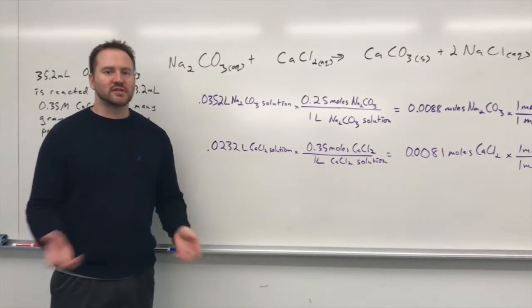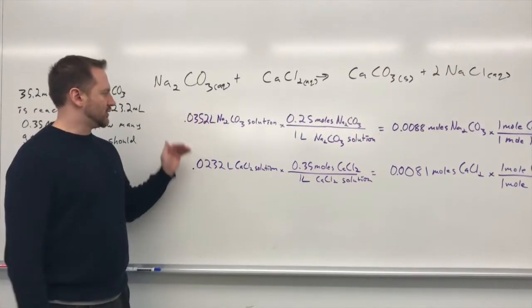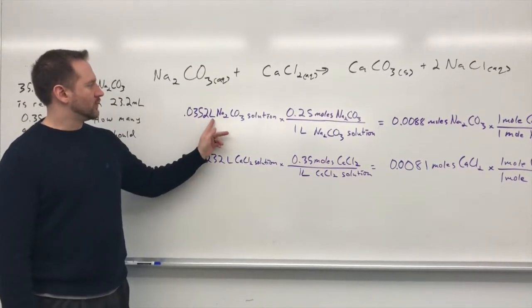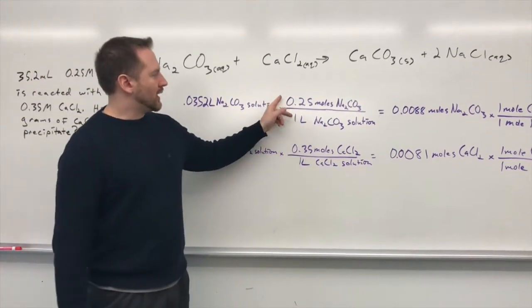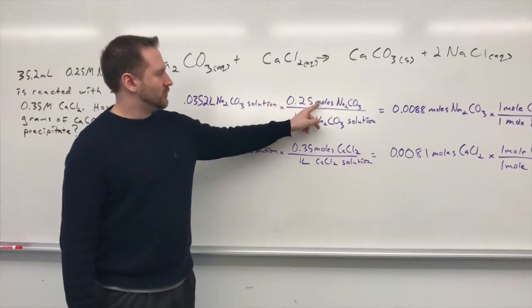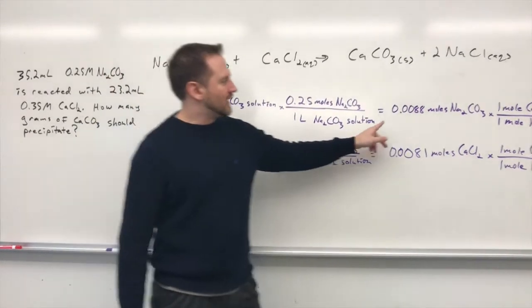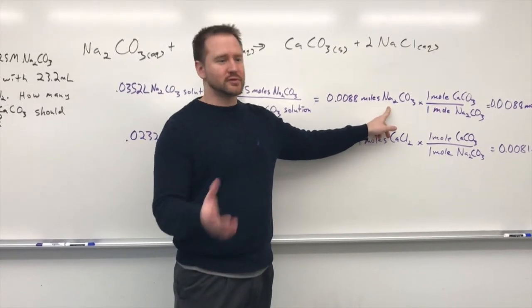So how we approach this is just the same way we would any other limiting reactant problem. So we have a certain amount of each of the reactants. Now the difference is, this time we're going from liters of solution, we're going to use the molarity as a conversion factor, so we have moles of sodium carbonate per liters of sodium carbonate solution, to get us the number of moles of sodium carbonate. So that's how we get to moles. That's the only thing that's really changed fundamentally.